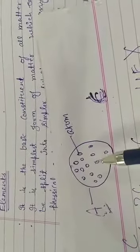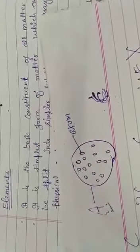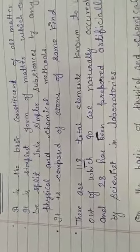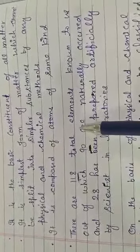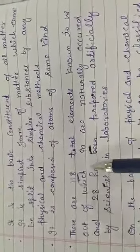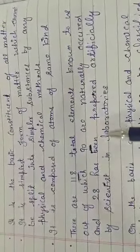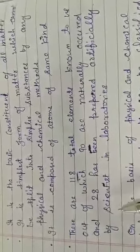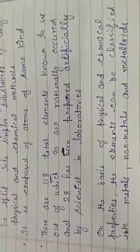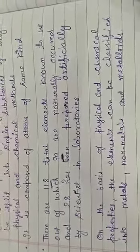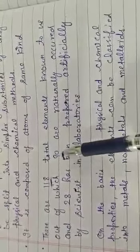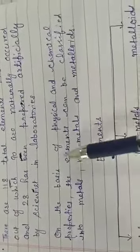There are 118 elements known to us, out of which 90 occur naturally and 28 have been prepared artificially by scientists in laboratories.